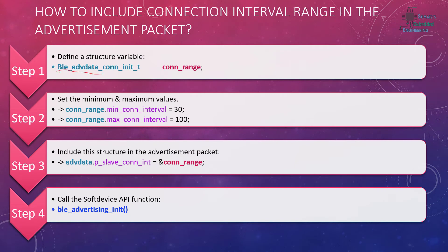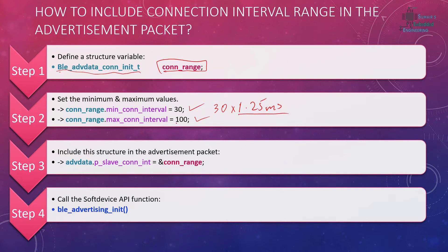In order to include it in the advertisement packet, we need to define a variable of type ble_adv_data_conn_int_t and give it a name — for example, I'm naming it con_range. Then we set its minimum connection interval time and maximum connection interval time values, which will be multiplied by 1.25 milliseconds. The maximum here is 100.